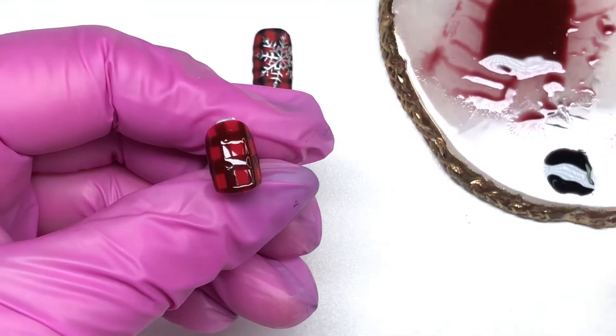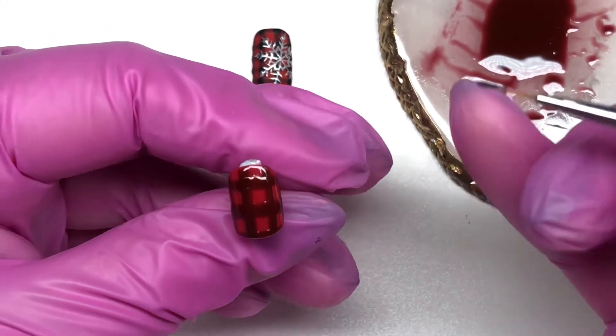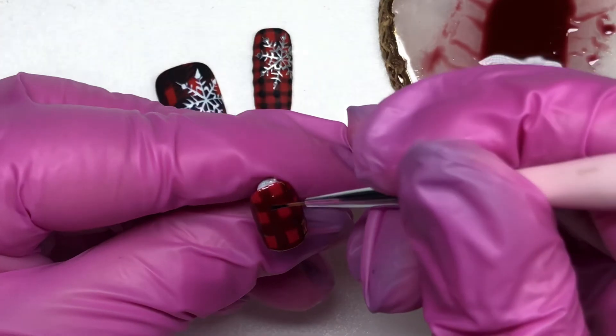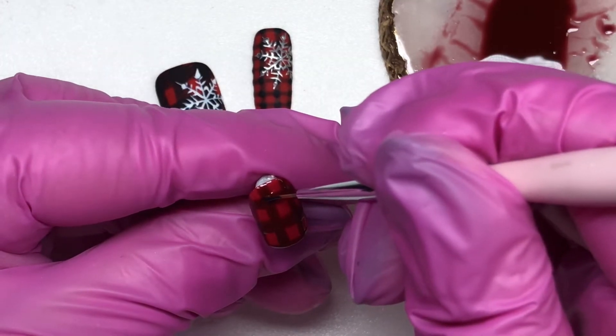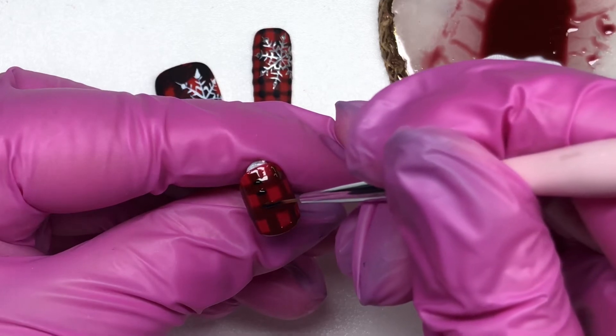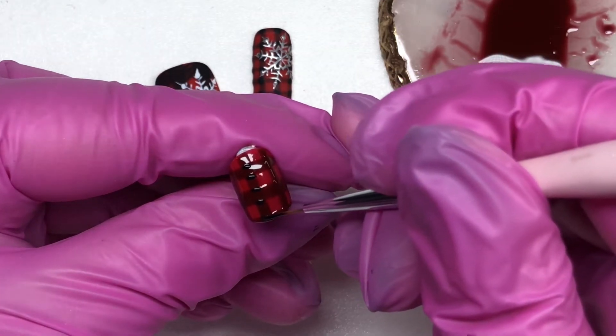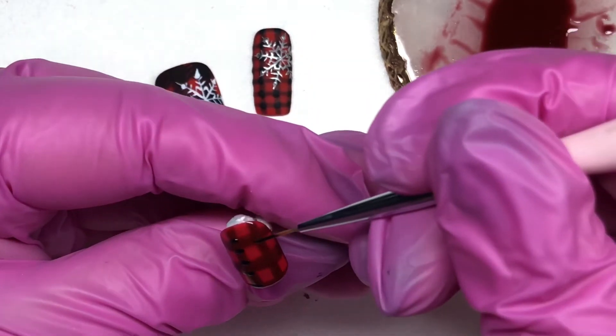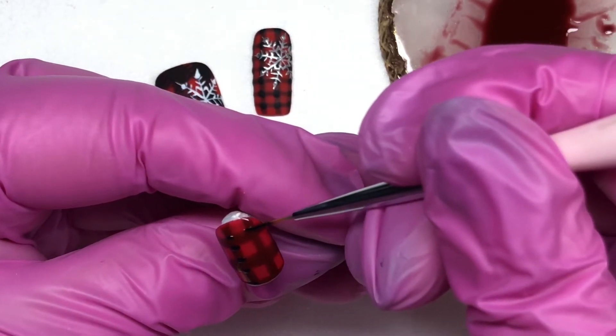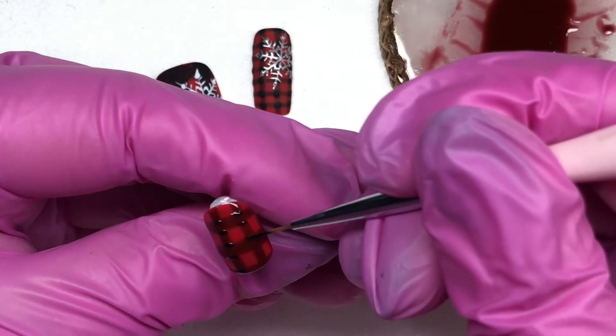Now we went ahead and cured that and let's go in with our straight black. We're going to start painting the little tiny squares and it's like every other square you're going to paint. Just try to make sure that you do this part very even and symmetrical so your squares come out nicely defined. I think that's the trick here.